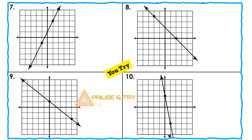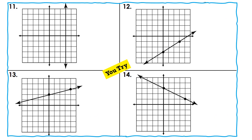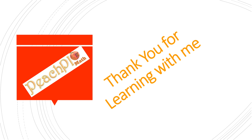Now try four examples on your own — pause the video and work through them. Check your answers when you're ready — I've written in the rise over run and reduced the fractions, so hopefully you got them correct. Then there are four more problems; pause and try those as well. Check those final answers the same way. We've reached the end of the lesson — thank you for learning with me. If you haven't already, please like, comment, share, and subscribe.